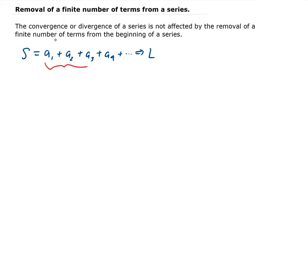If you remove those terms, let's call this new series T. So T starts from a4 now. It's not going to converge to l, but it's going to converge to something else — let's call it m. And that's true for any series, whether it's converging or diverging. If the series is diverging and you remove the first few terms, then the series will still diverge.